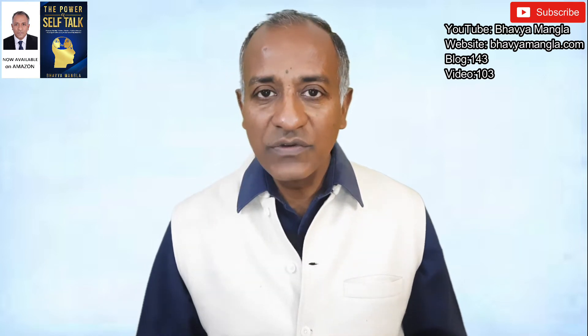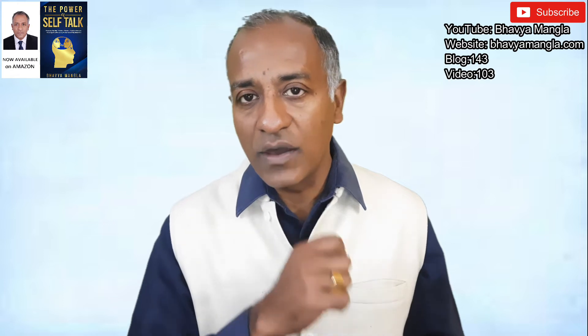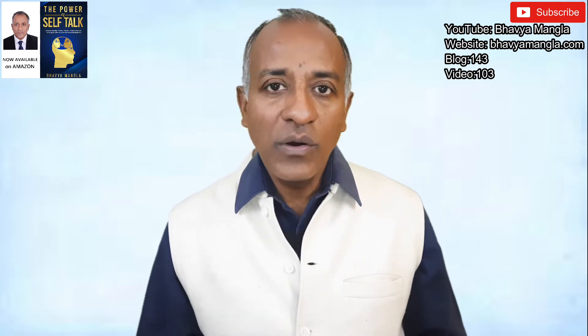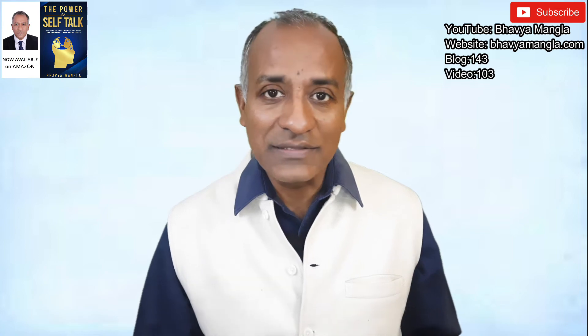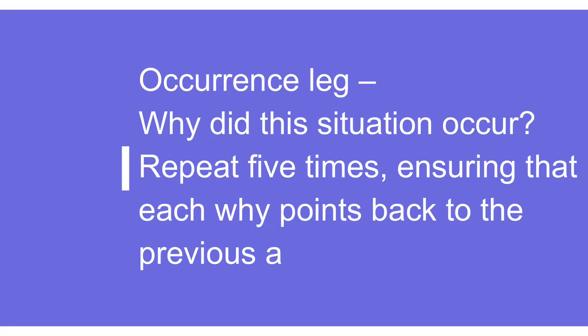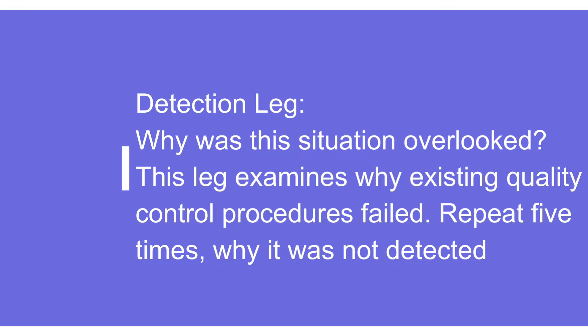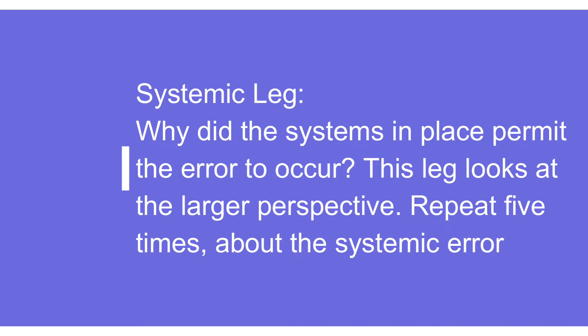The first question is: what exactly is this three-legged 5-Why approach? When we talk about three-legged: the first leg is about occurrence — why this problem actually happened. The second leg is about detection — the problem has happened, but why was it not detected earlier and why did it reach the customer? The third leg, very important, is the systemic approach — the problem occurred, but what was the issue in the system that resulted in this problem?